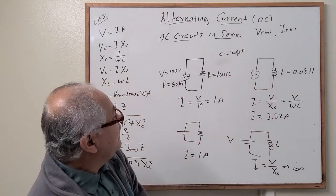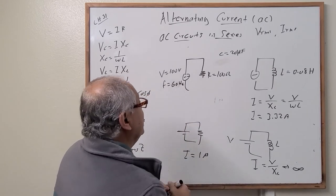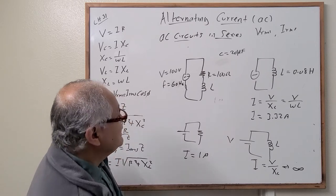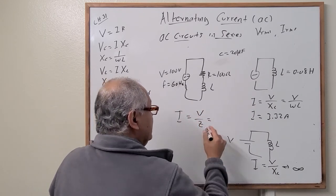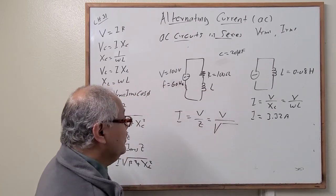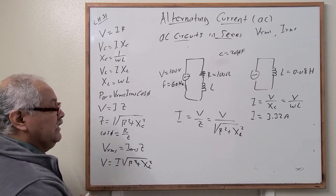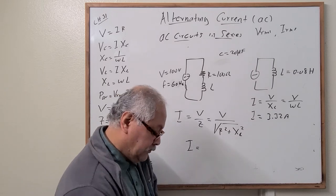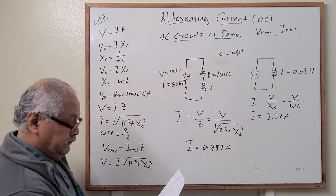Now let's combine the resistor and the inductor and see what happens. The current equals voltage divided by the impedance, where the impedance equals the square root of R squared plus X_L squared. Substituting the values, the current equals 0.957 amps for this particular example.